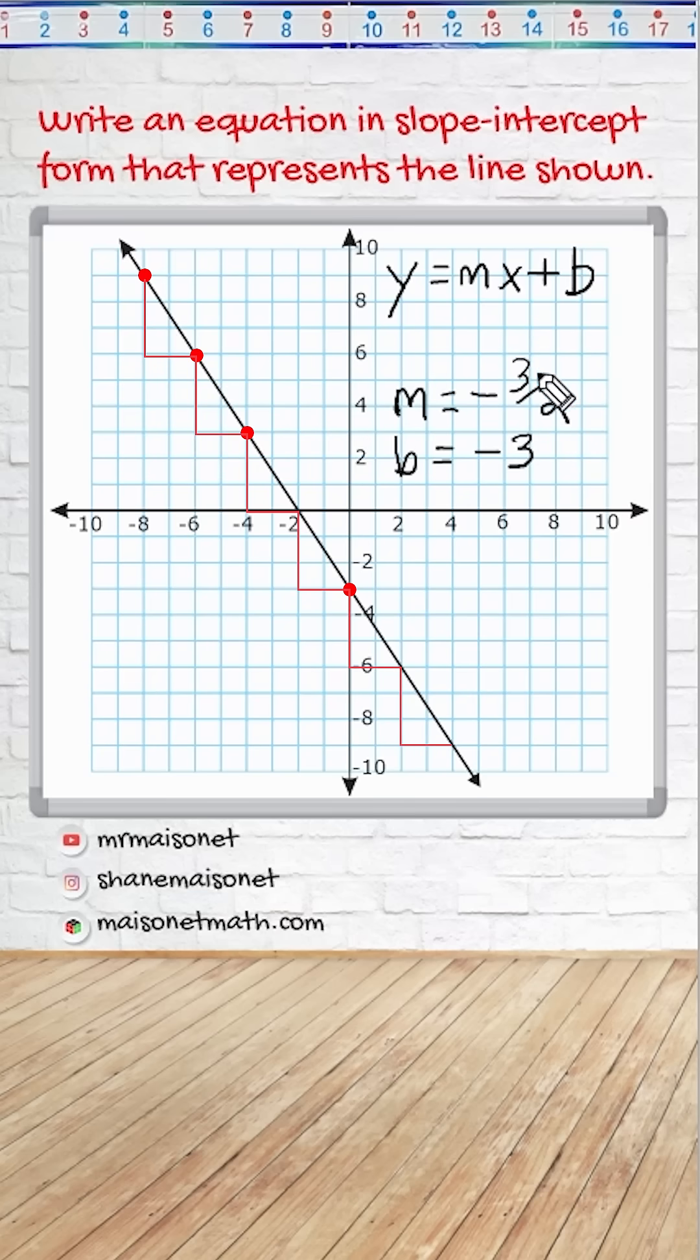So what we do now is take our slope and plug it into the equation. We substitute m with negative 3 halves x, and then we substitute b with negative 3. And this is the equation that represents this line in slope-intercept form.